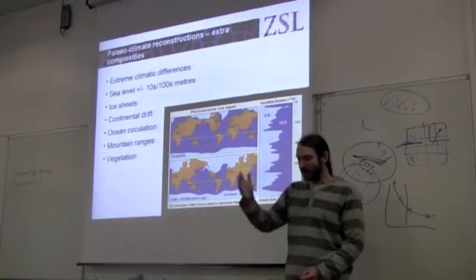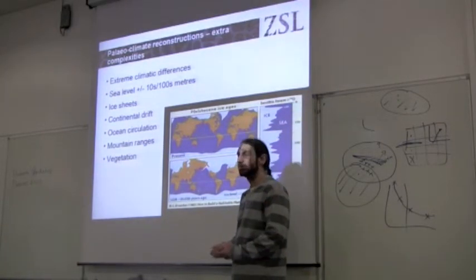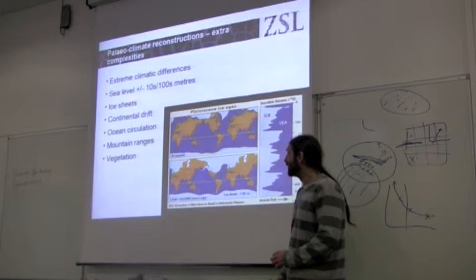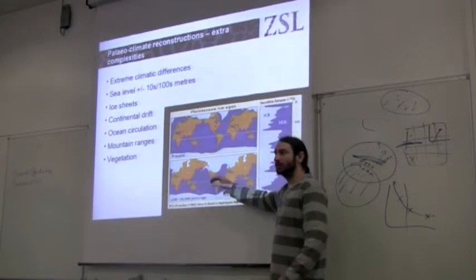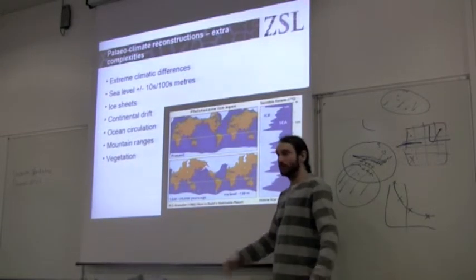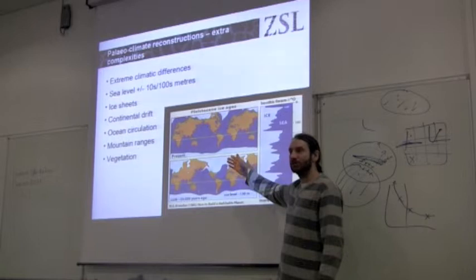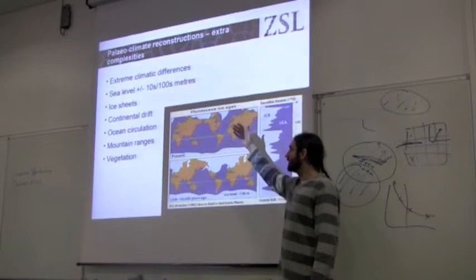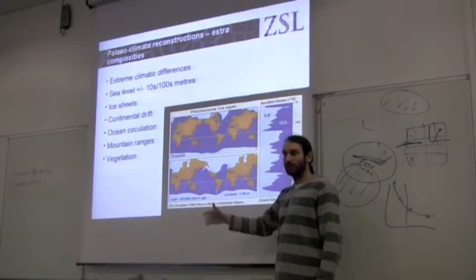When we move back into the millions of years, we have to think about continental drift — our land structures were in different places. We need to consider ocean circulation: when continents are linked or separated, circulation patterns are entirely different from today. And mountain ranges matter too — the Himalayas are so tall because they're relatively young, and the appearance or disappearance of mountain ranges has dramatic impacts on the reconstructed climates.